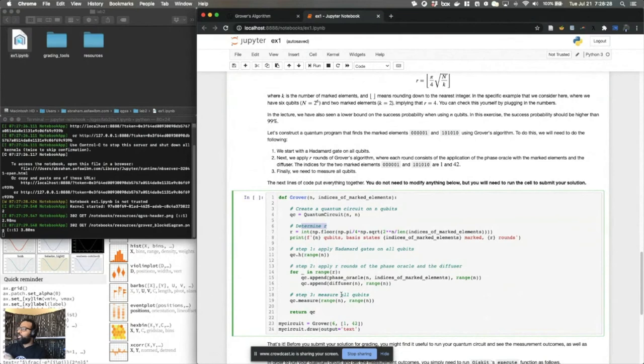Then you're going to apply Hadamard on all qubits, and then do the repeated application of the phase Oracle and the diffusion operator. So these operations, you do them R times, and R is the number of rounds that are determined by this expression here. And in the end, you do a measurement of all the qubits and see what states are measured.